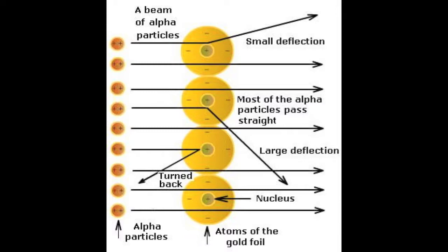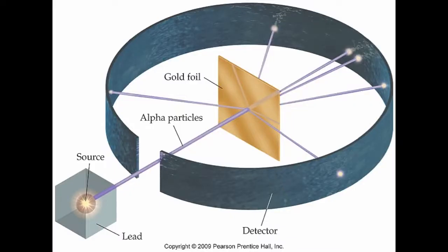What he actually found was that the majority of particles did pass straight through the gold foil. He noticed a few were deflected to the left and to the right, but every now and then some alpha particles would be strongly deflected, and even less frequently, some would bounce completely backwards. You can see in this picture that most particles went straight through, some were deflected a little, some a lot, and some bounced back.